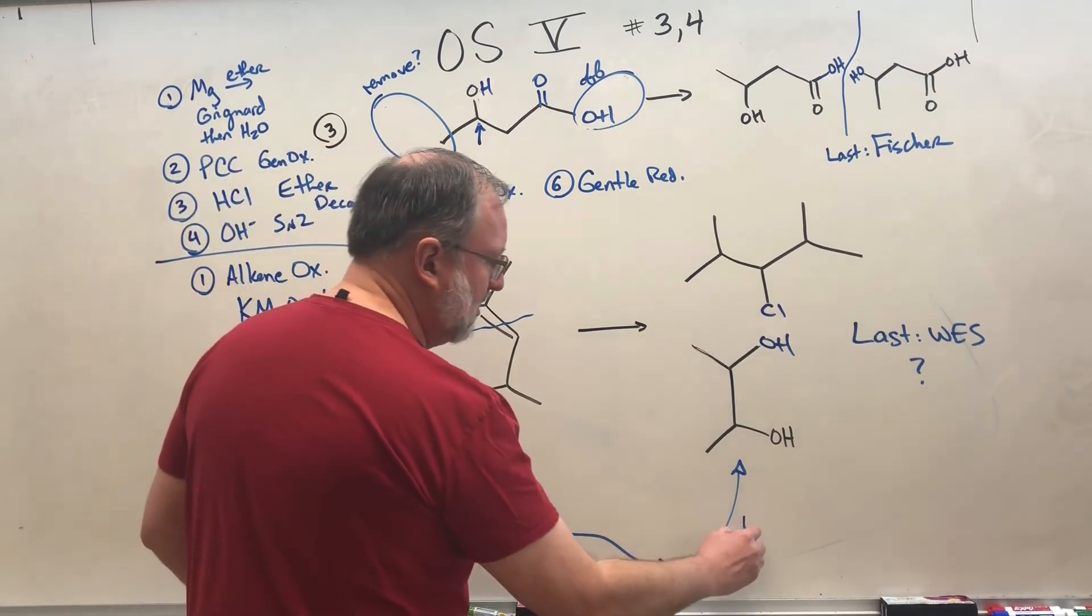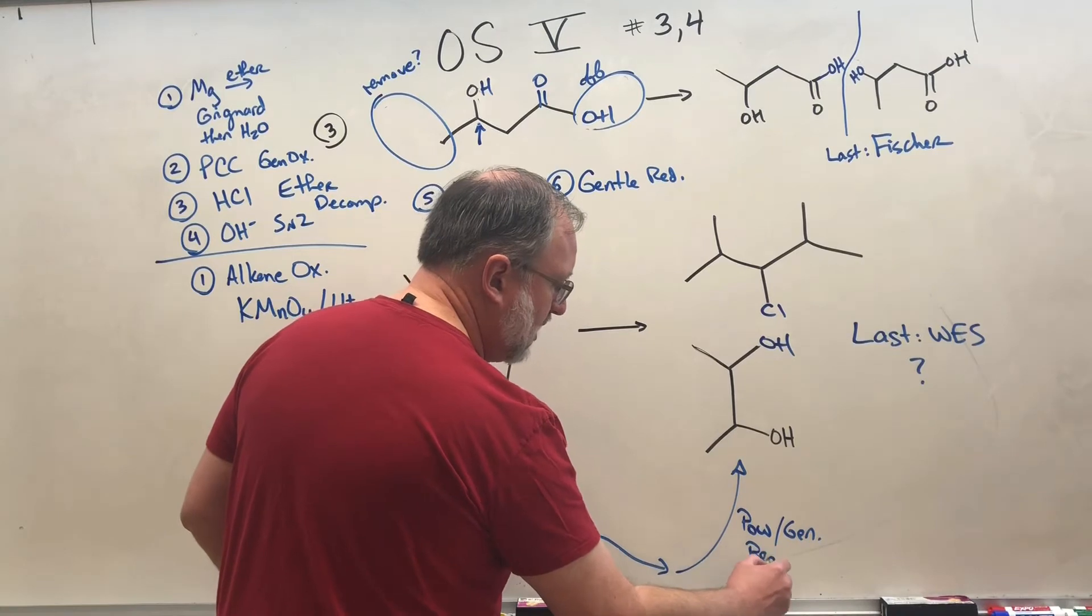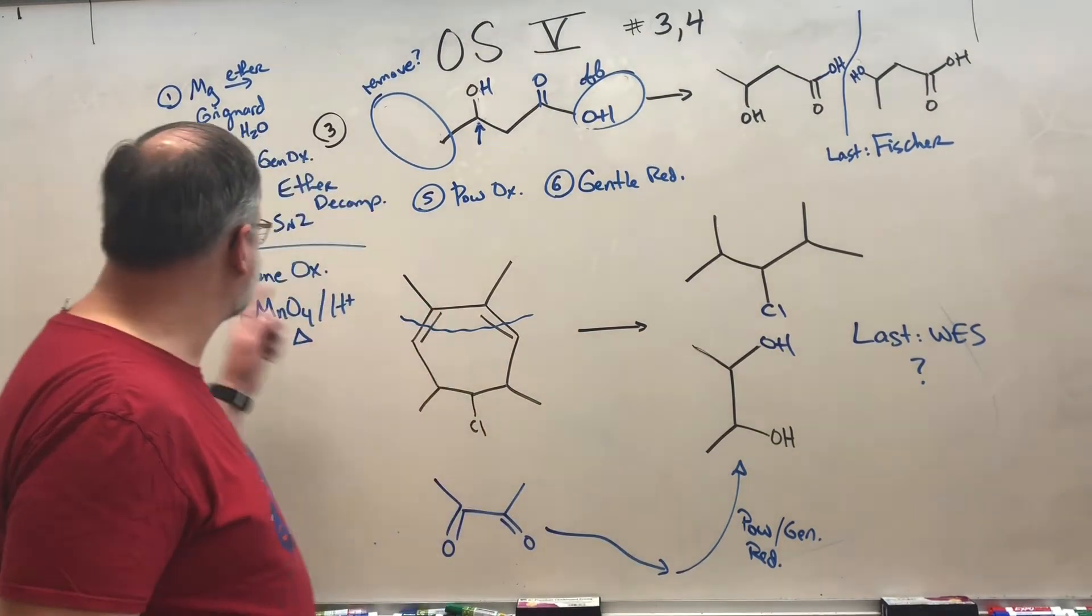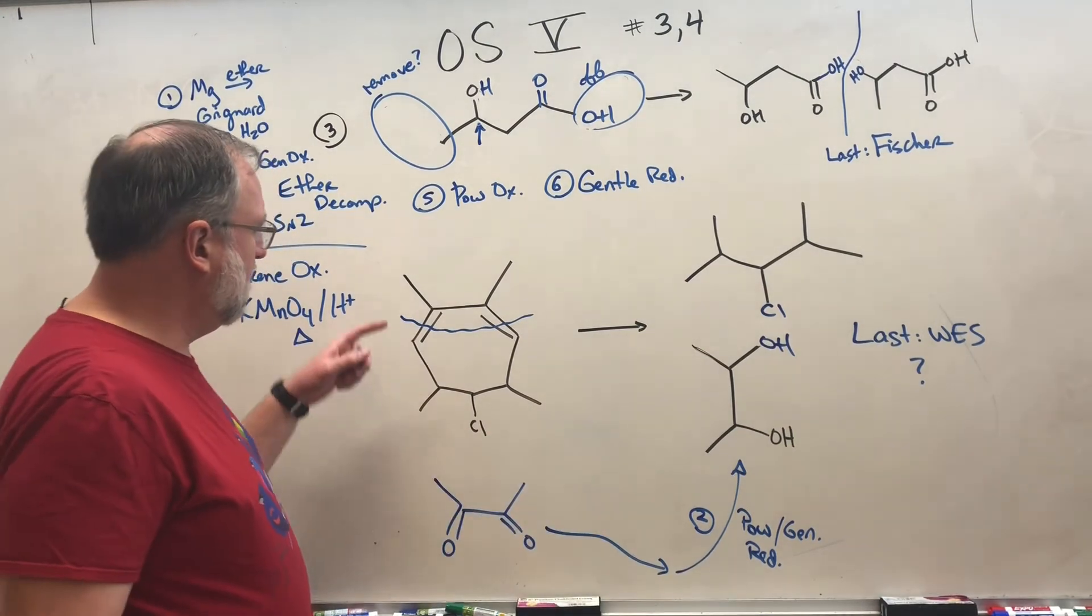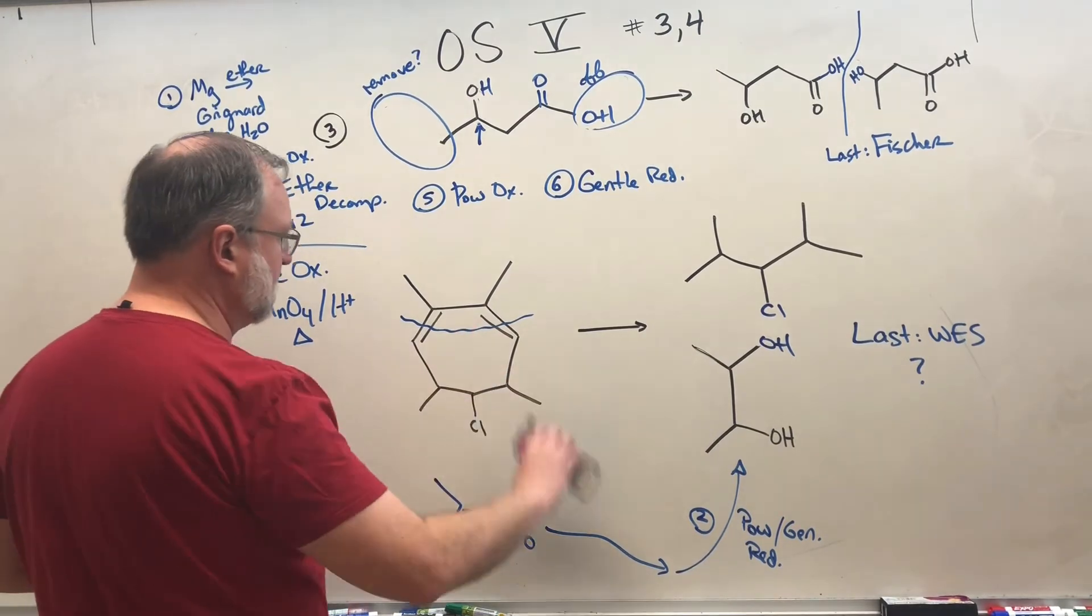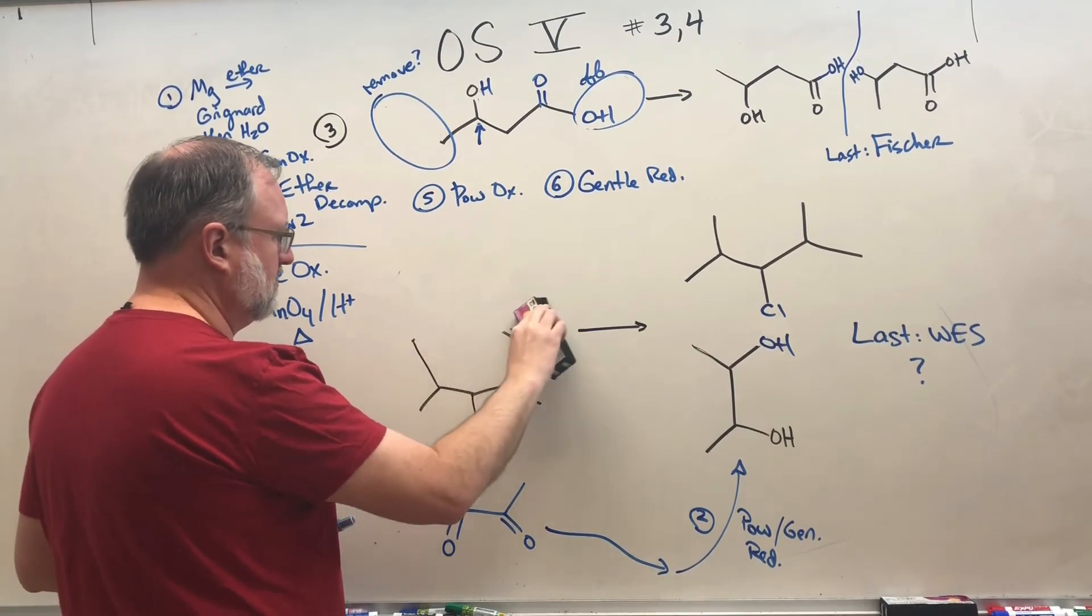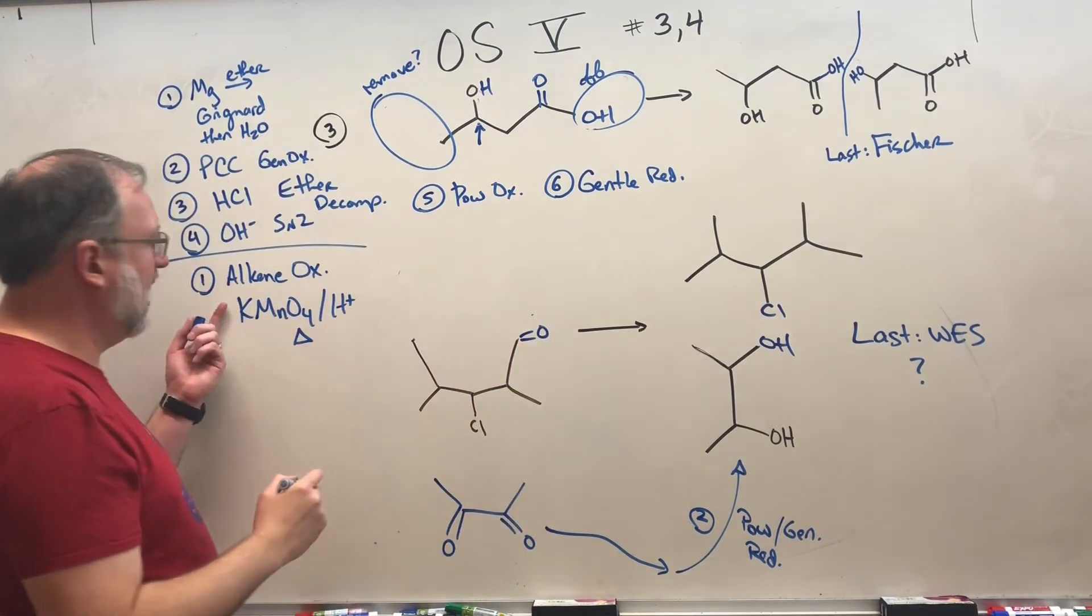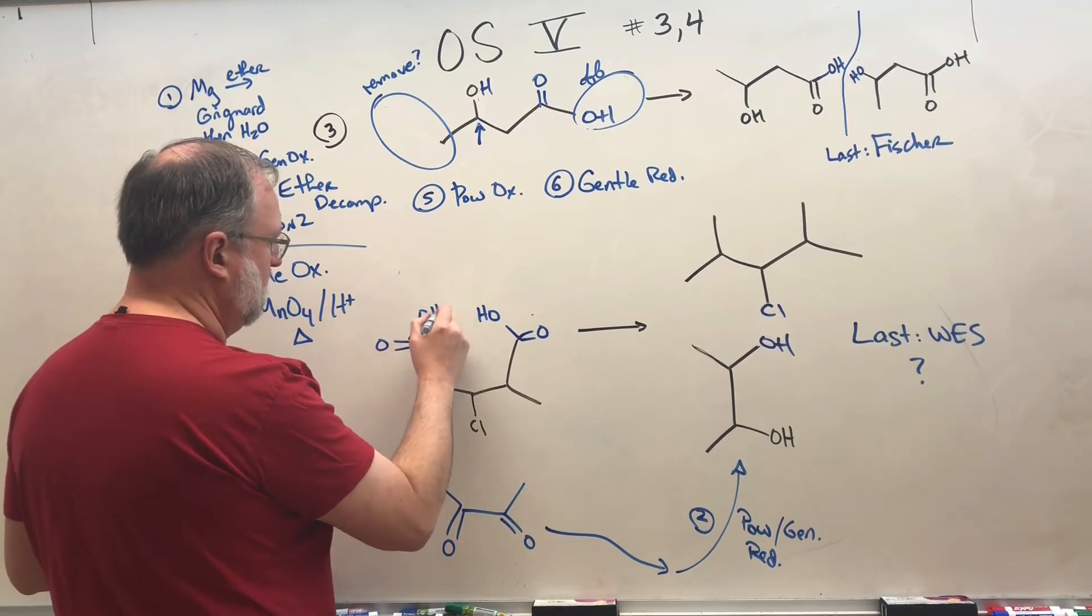So this top bit right here is going to be converted into this thing. This is butadione, two, three butadione. Oh, and right away, I noticed something nice. This is looking a lot like that. So maybe we can go from here to here. That looks like powerful or if you prefer gentle. Either way, we're talking reduction. So lithium aluminum hydride or sodium borohydride will get you from here to here. So if we call this step one, maybe we call this step two down here.